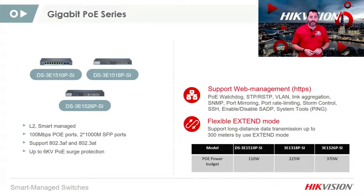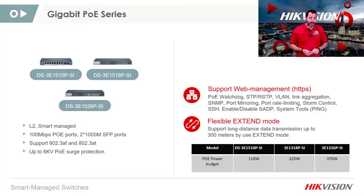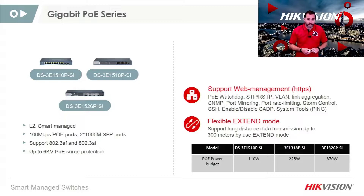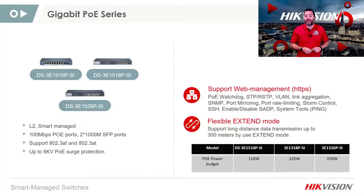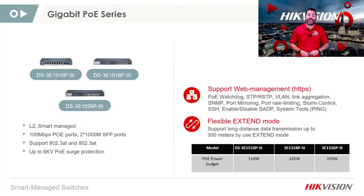The gigabit PoE series has a built-in watchdog which is able to detect and restart offline cameras automatically — well, in actual fact it's just the port. BLAN support for easy port isolation is available, enhancing network security by segregating ports away from the rest of the network. SSH — secure shell — is a network protocol that gives users a secure way to access a computer over an unsecured network. Port mirroring is also supported, along with link aggregation, which bundles individual ethernet links together so they act as a single logical link. Rate limiting means you can slow down traffic on a defined single port and keep it from exceeding any limitations you set.